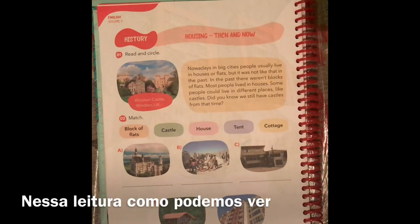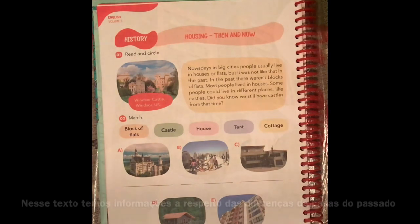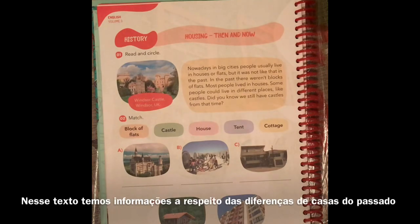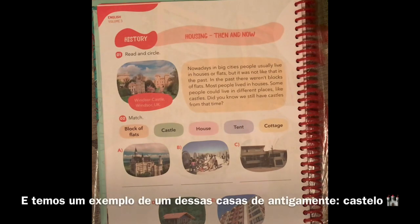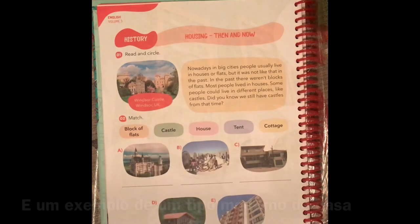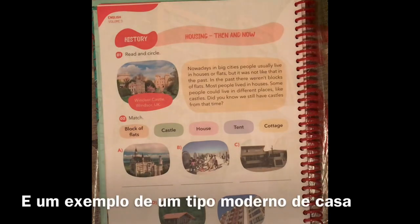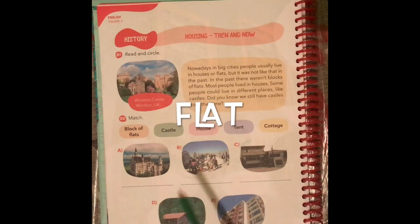In this lecture, as we can see, we have information about the difference between houses in the past, and we have an example of one of these houses — the castle — and an example of a modern kind of house — the flat.